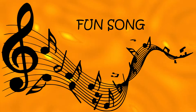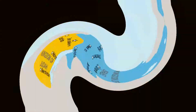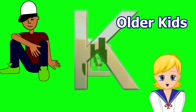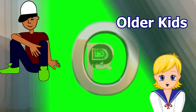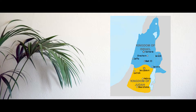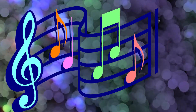For younger students, we have a fun song that will help them keep these unfamiliar names and places straight. For the older kids, we will show you some alphabetical organization in the kings' names and their kingdoms. In either case, a divided kingdom map prominently displayed in your classroom can be a helpful visual, especially for the younger students, as they sing the following song.